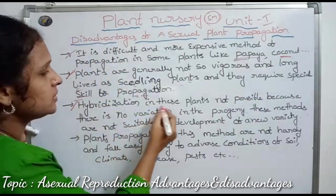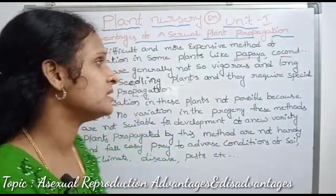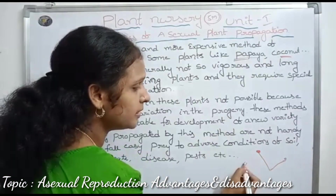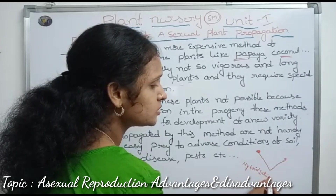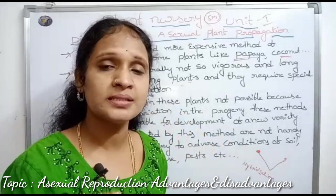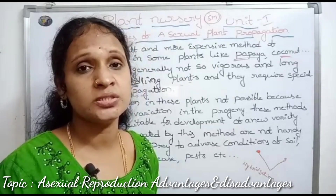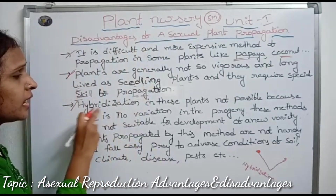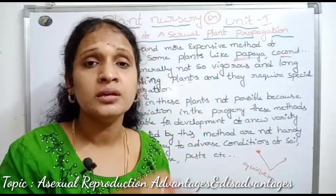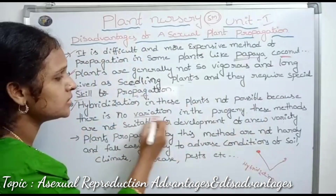Third disadvantage: hybridization in these plants is not possible. Hybridization means crossing between two different species, which shows genetic variation because two genetically different parents are crossed. But in vegetative propagation, hybridization is not possible because there is no variation in the progeny.